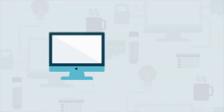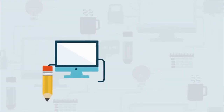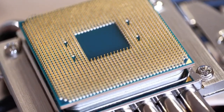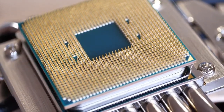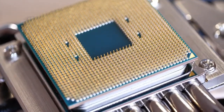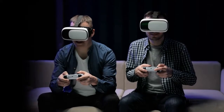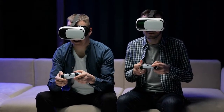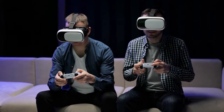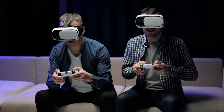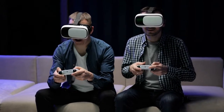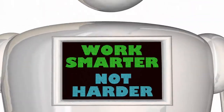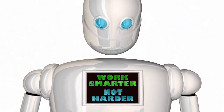What is a dual-core processor? A central processing unit with two processors is known as a dual-core CPU. Dual-core processors have their own controllers, allowing them to perform more efficiently and effectively than single-core processors. Because there are two processors, they can do jobs faster.